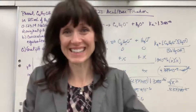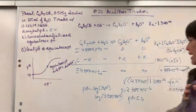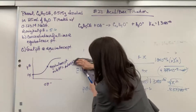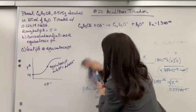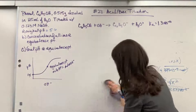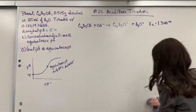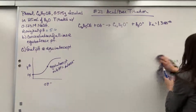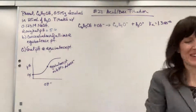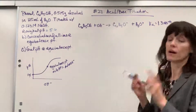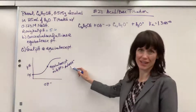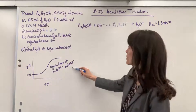We've got part A done — really a basic ICE table and a good review. When you see that on a test, you'll be confident. That's the easy part. Now we're going to do the equivalence point. At the equivalence point, we know one really important fact: the moles of the hydrogen equal the moles of the hydroxide — moles of the acid equal moles of the base.